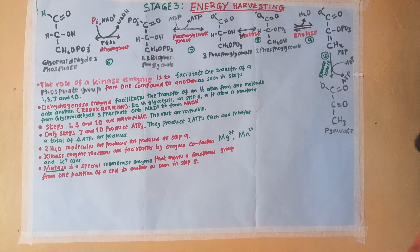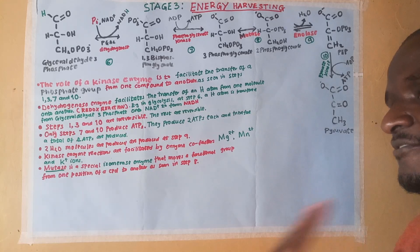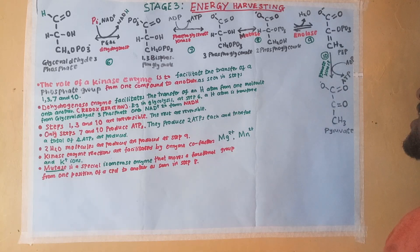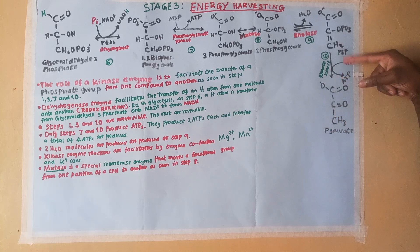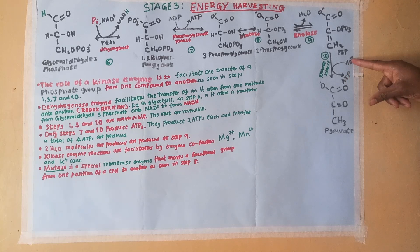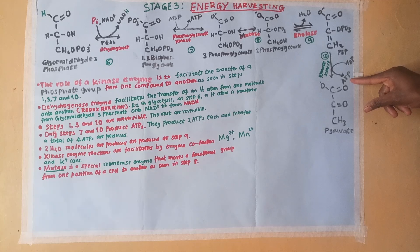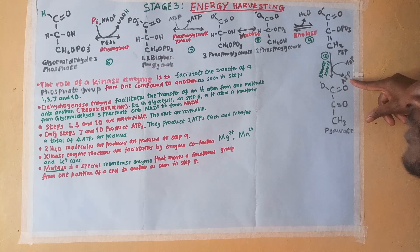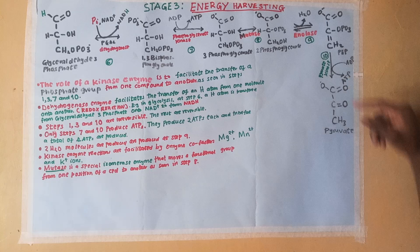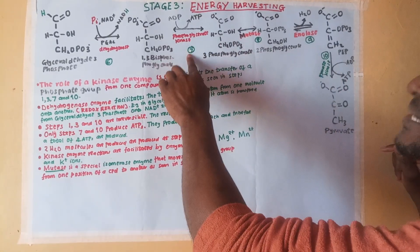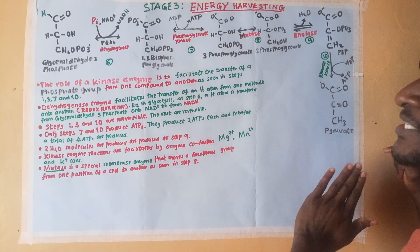Step 10 is facilitated by pyruvate kinase. Since the role of a kinase is to move a phosphate group from one compound onto another, pyruvate kinase transfers a phosphate group from position 2 of PEP onto ADP to form ATP. This is our second ATP being produced. Since the process takes place in two cycles, two ATPs are produced at step 7 and two ATPs are produced at step 10, giving a total of four ATPs produced.